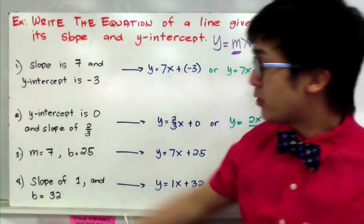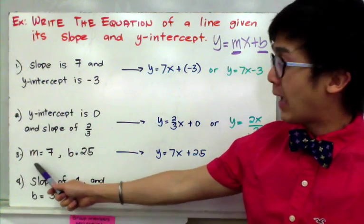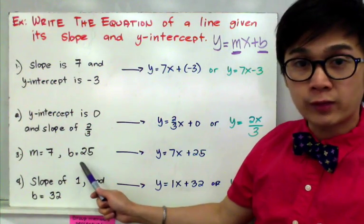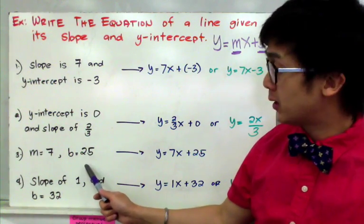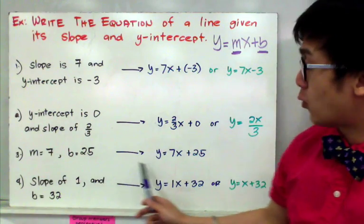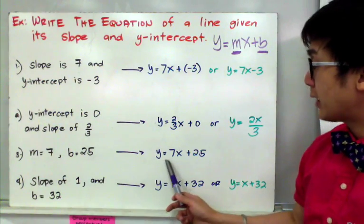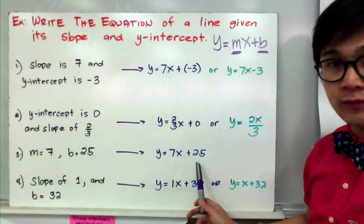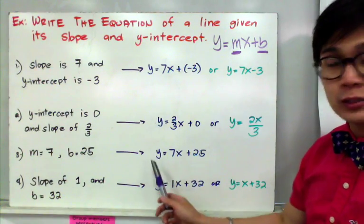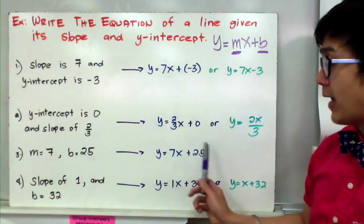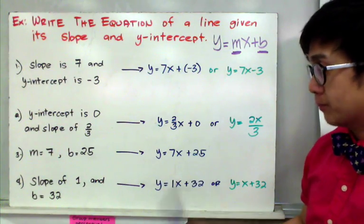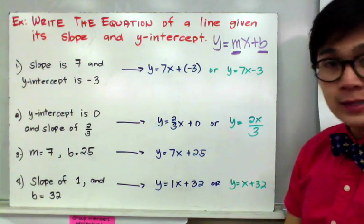For number 3, we are given that m is equal to 7 and b is equal to 25. By direct substitution, our equation of a line in slope-intercept form is y equals 7x plus 25. Since it's already in simplest form, we don't need to rearrange any values in our slope-intercept form.